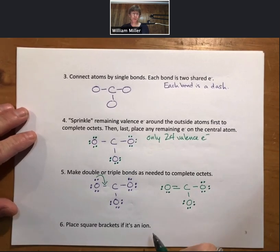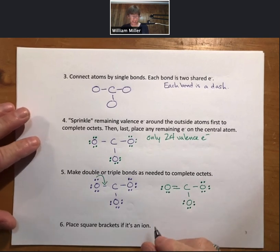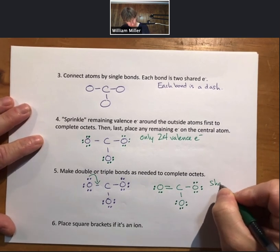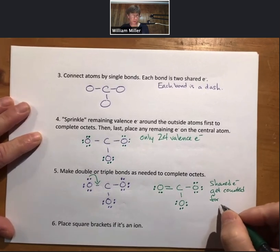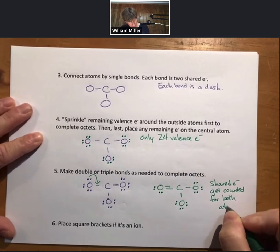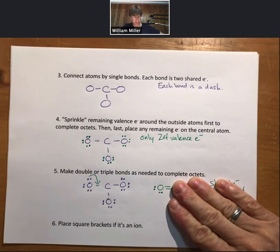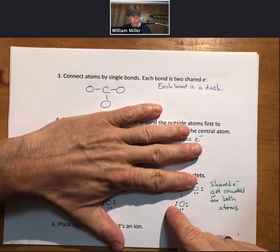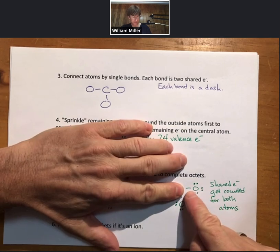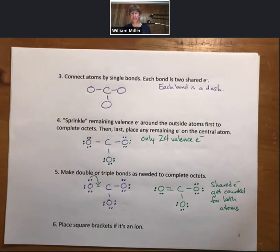Now we're going to look for octets. We get to count shared electrons for each atom—they get counted for both atoms. If we look at this oxygen, we have two, four, six, eight electrons around it. If we look at this oxygen, we have one bond, which is two, four, six, eight. That is an octet. Two, four, six, eight octet over here. And the central carbon, two, four, six, eight there. So everybody has an octet. That's what you're shooting for with the Lewis structure. We've arrived there. That's step five.